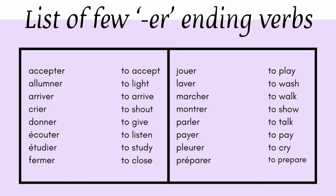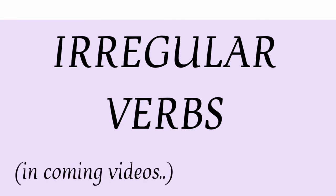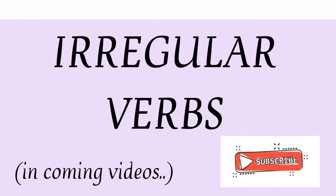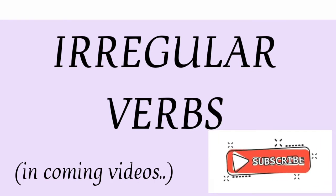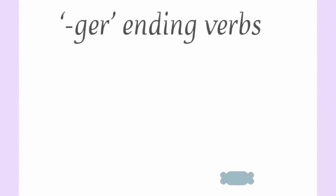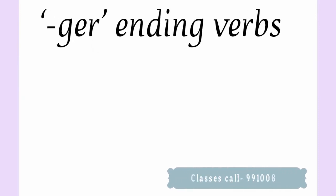There are some verbs which end in ER but they do not follow the same pattern of conjugation, and for that reason they are called irregular verbs. We will cover irregular verbs over time, but today I'll tell you a few of them. Let me tell you the conjugation of verbs which end with GER. Though there is ER at the end, there is also a G before that, so GER ending verbs have a particular rule of conjugation.